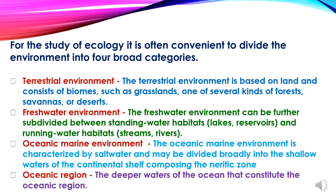For the study of ecology, it is often convenient to divide the environment into four broad categories. First is the terrestrial environment, which is based on land and consists of biomes such as grasslands, several kinds of forest, savannahs, and deserts. Second is the freshwater environment, which can be further subdivided between standing water habitats like lakes and reservoirs, and running water habitats like streams and rivers.